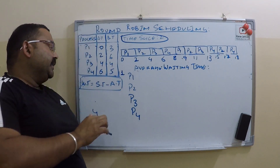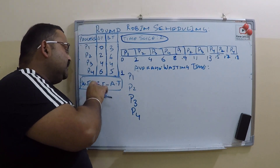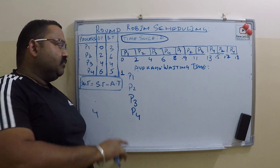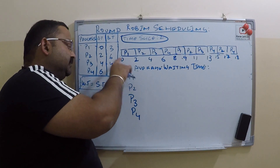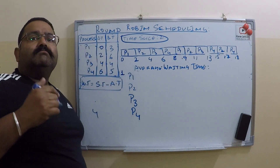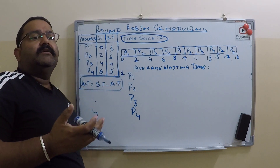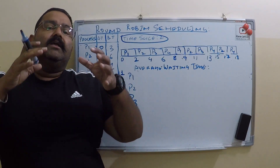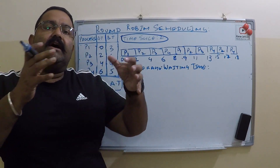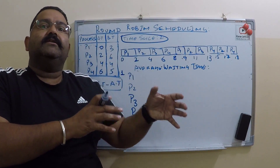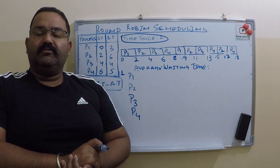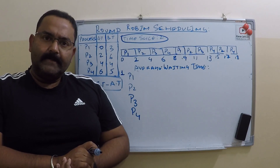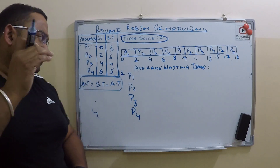So what is waiting time? Waiting time is the start time — at what time the process gets the processor — minus arrival time, which is at what time the process arrives in the wait queue.